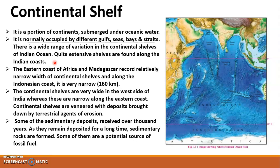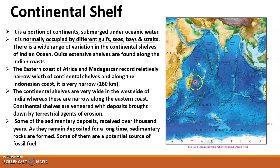India, being a peninsula, is covered by water from three sides, giving it a vast coastal line. The eastern coast of Africa and Madagascar record a relatively narrow continental shelf width of around 160 kilometers along the Indonesia coast. The continental shelves are very wide on the west side of India, whereas they are narrow along the eastern side.